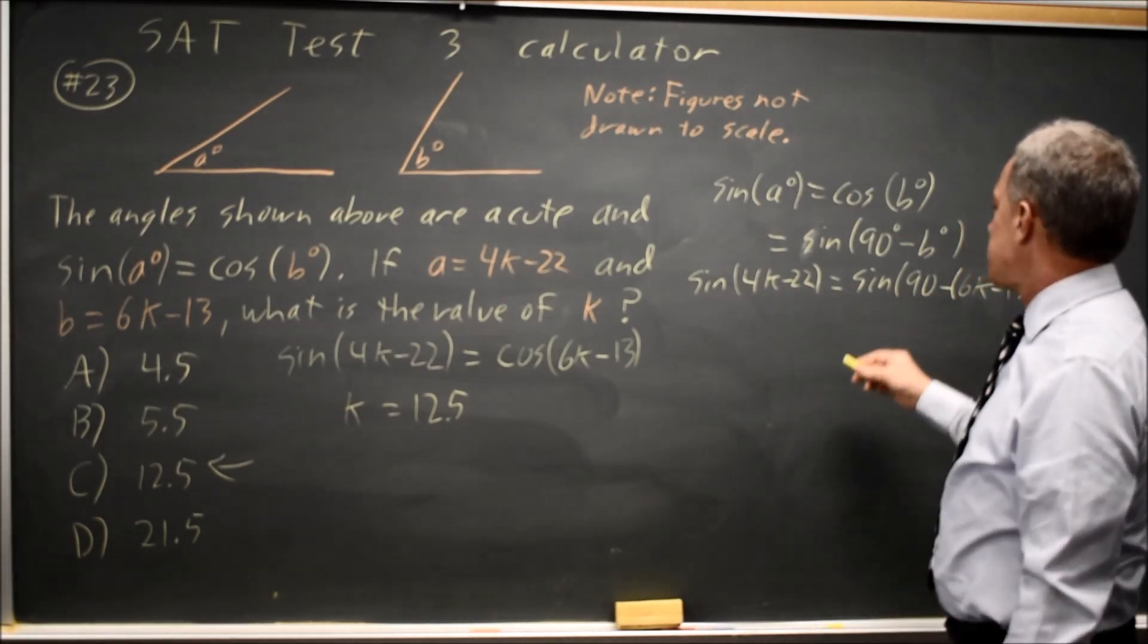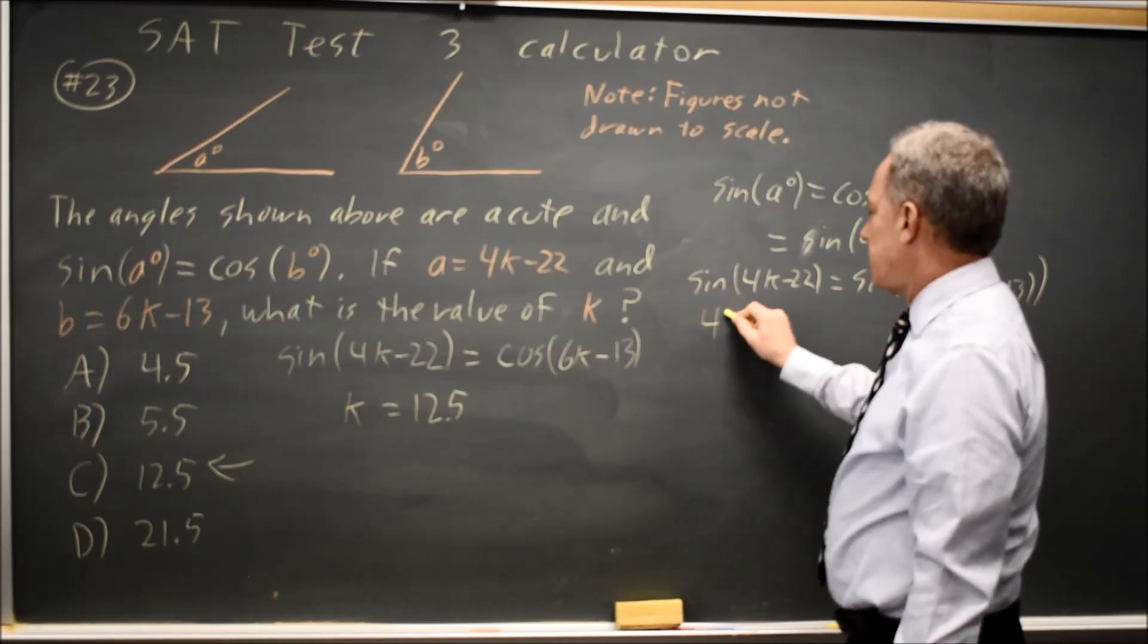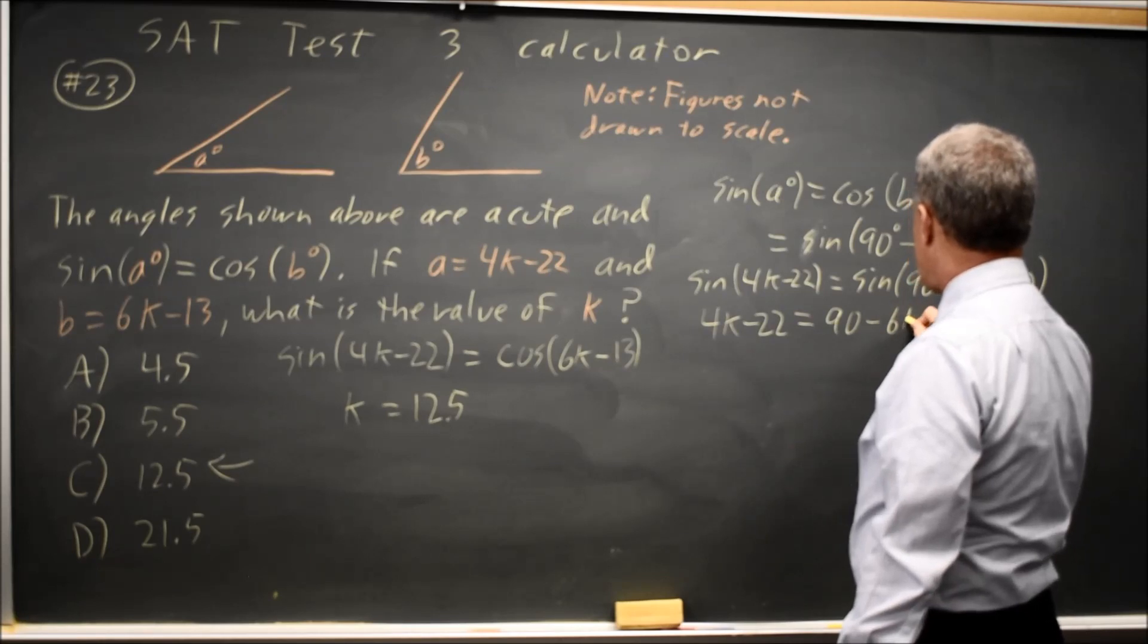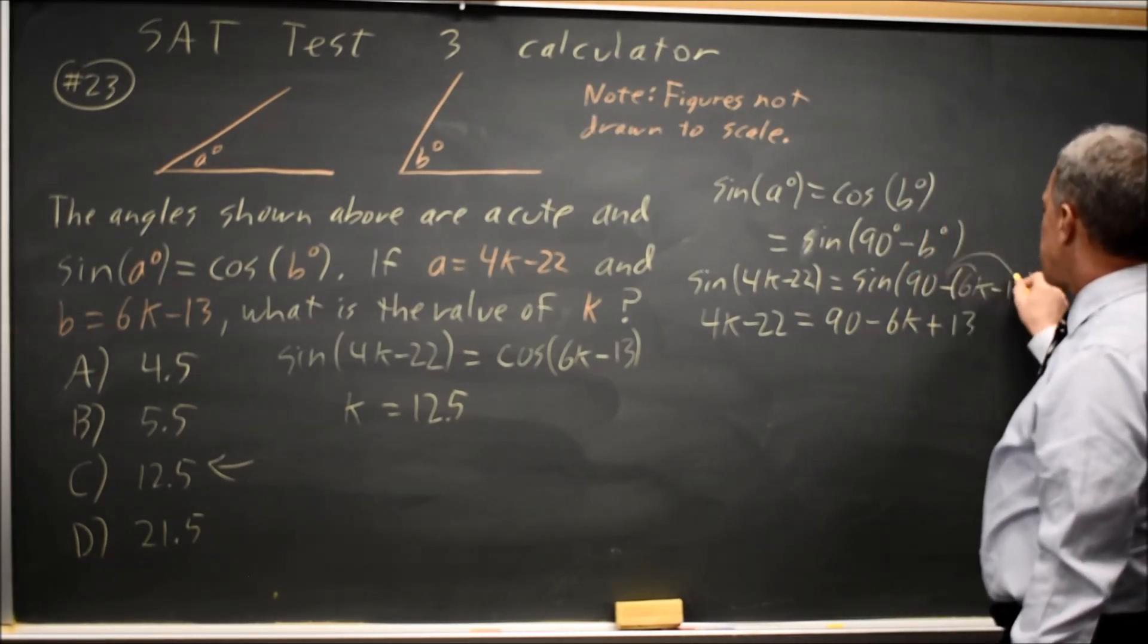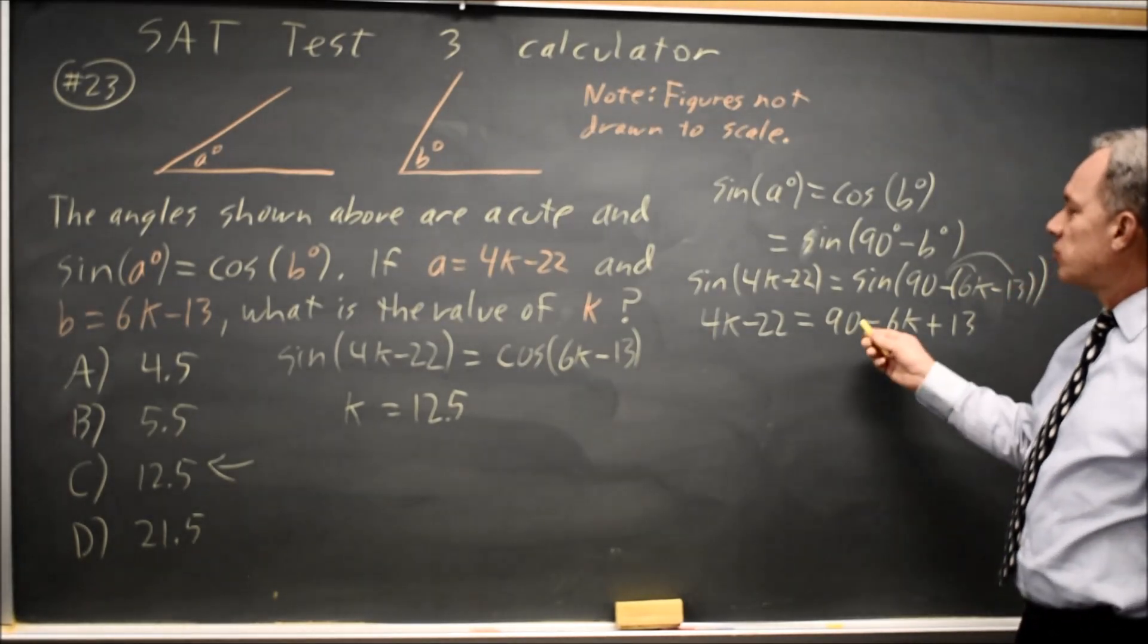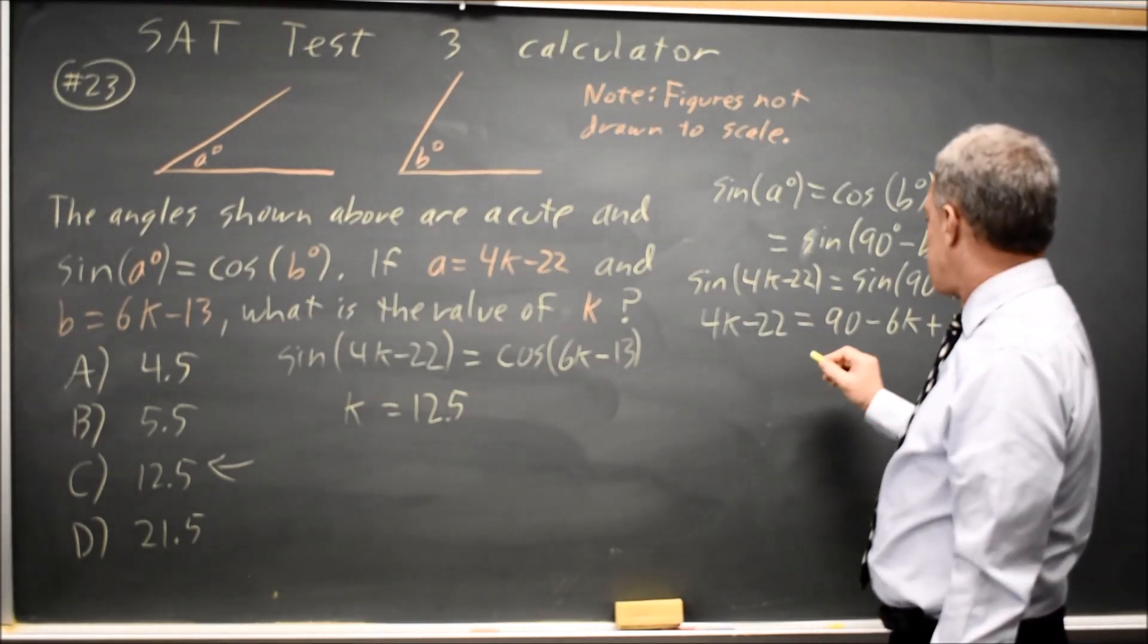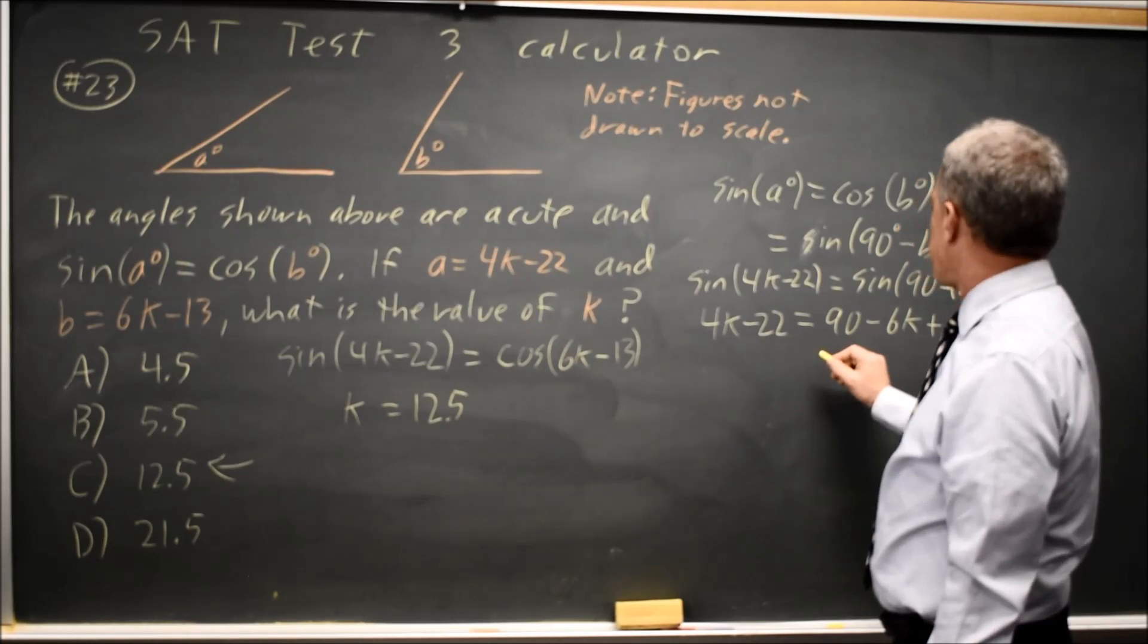90 minus the quantity 6k minus 13. If the sine of these two expressions are equal, I'm going to assume the expressions are equal, distributing this negative to the 6k and to the 13. There are possibilities for being off by 360 degrees, but we're not going to worry about that. We're going to assume that this is going to work out smoothly.